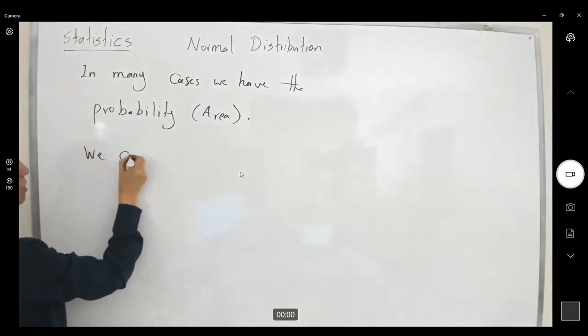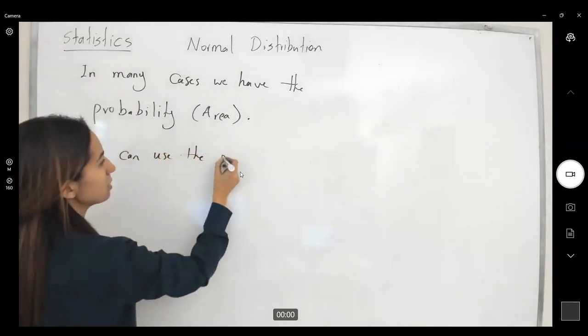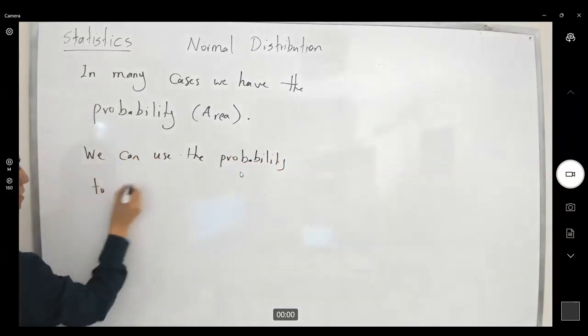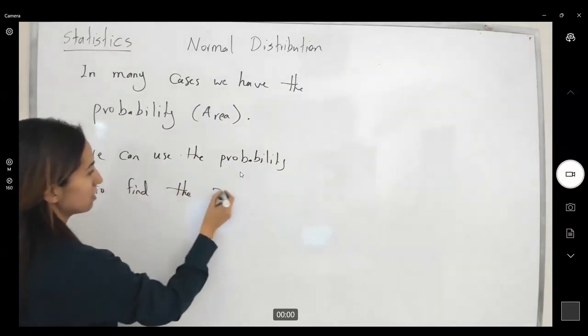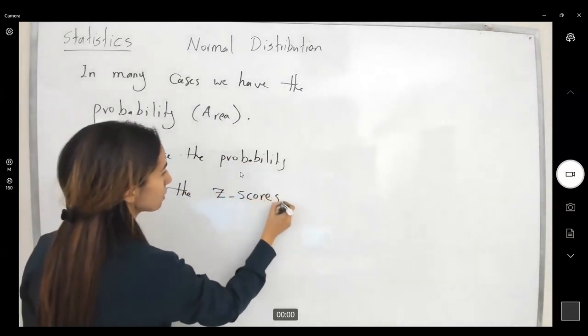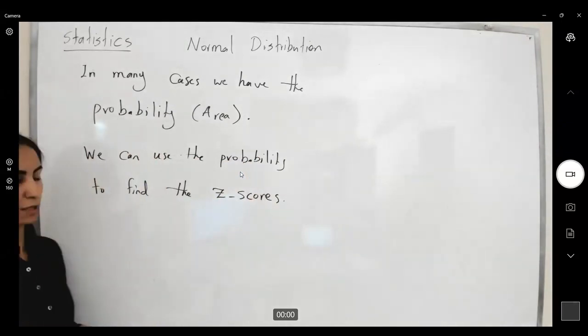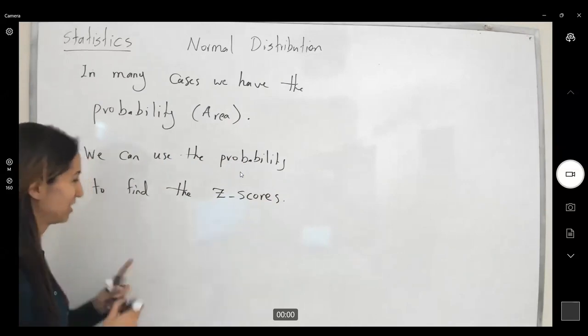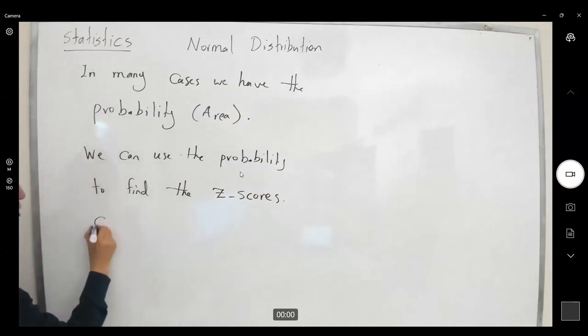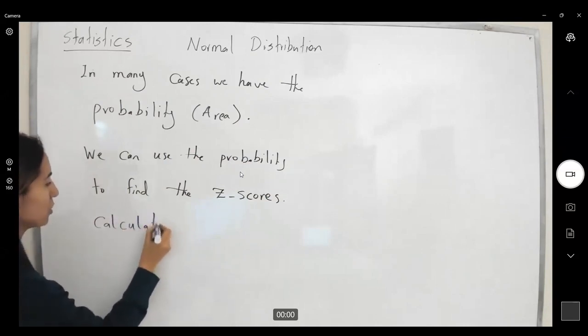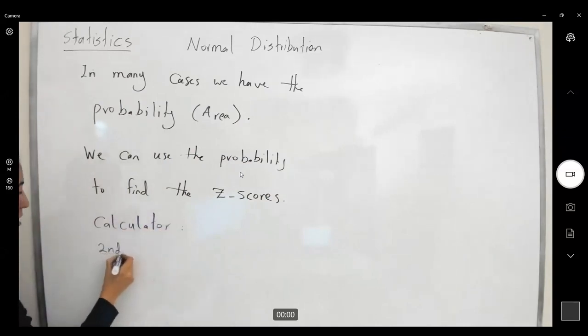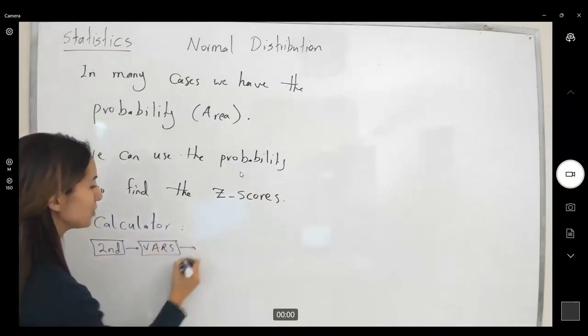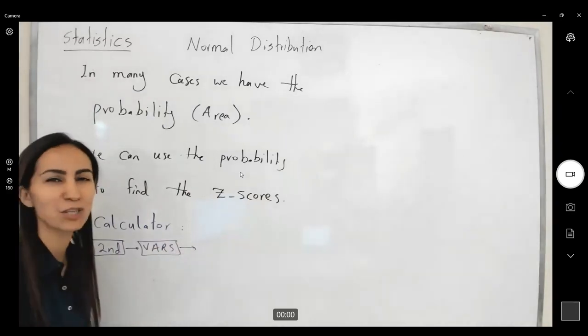We can use the probability to find the Z scores. The functionality that you're going to use is inverse norm. So in our calculator, you're going to go to second, you're going to go to vars, and then you're going to use the inverse norm.